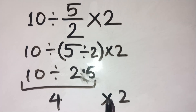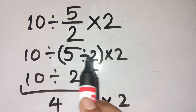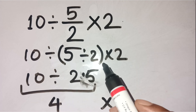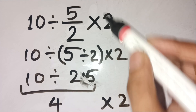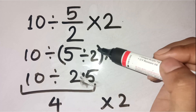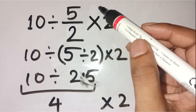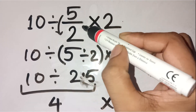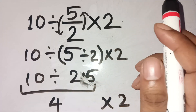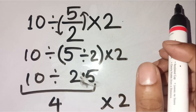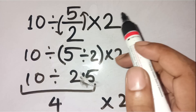That tiny pair of parentheses changes everything. If you don't believe it, try both versions on your calculator — one with parentheses and one without. You'll see the result flip from 2 to 8 instantly. And if you still have doubts, drop them in the comments — I'd love to explain it further.